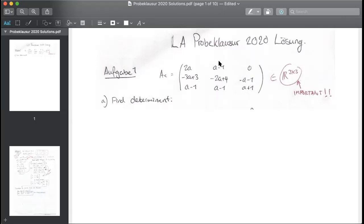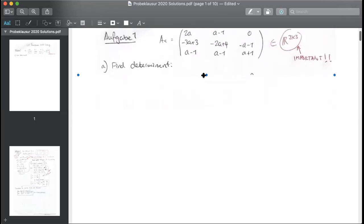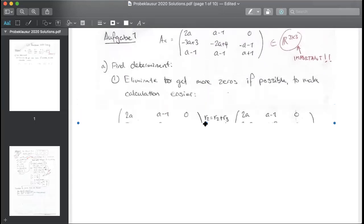Here, obviously, you can strike out this one by subtracting the third row from the first row, then you'd get a zero up here. Or you can make a zero here by adding the third row to the second row, and then you'll get a zero here as well. So let's see how we do that. The first step you want to do is eliminate to get more zeros as possible to make your calculation easier.